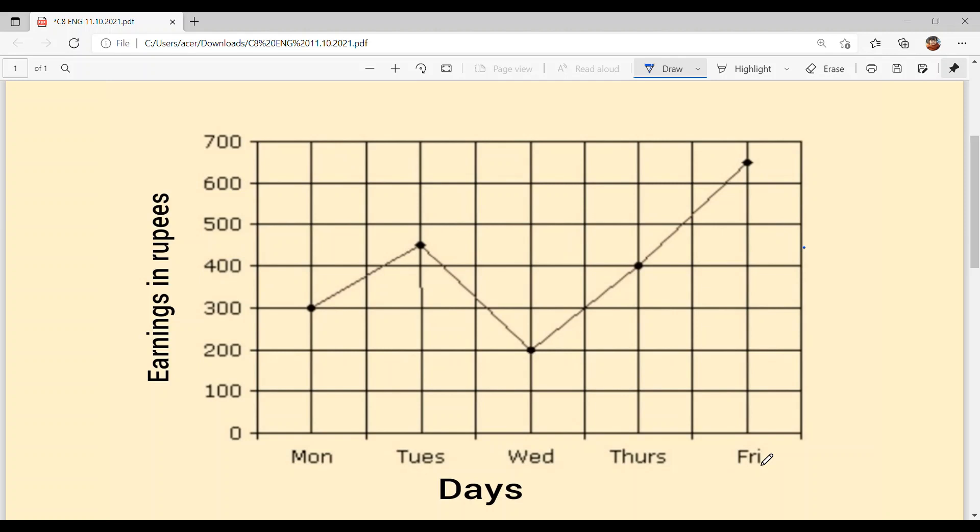So basically it is weekday earnings, which is Monday 300, Tuesday 450 because it's between 400 and 500, that means 450. Wednesday 200, Thursday 400, and Friday again 600 to 700, which is 650. Easy. It is not a tough line graph, you can solve it very easily.